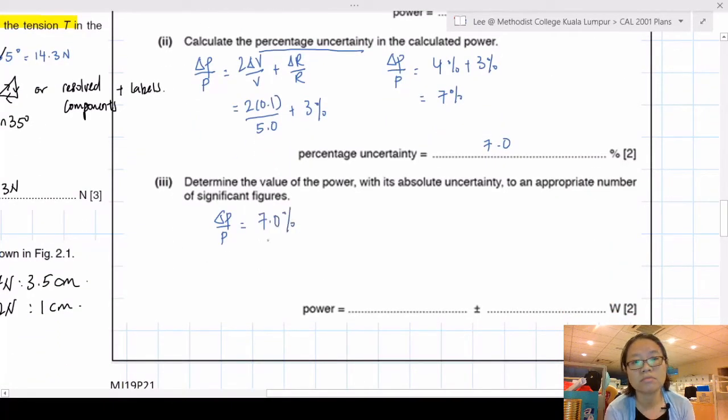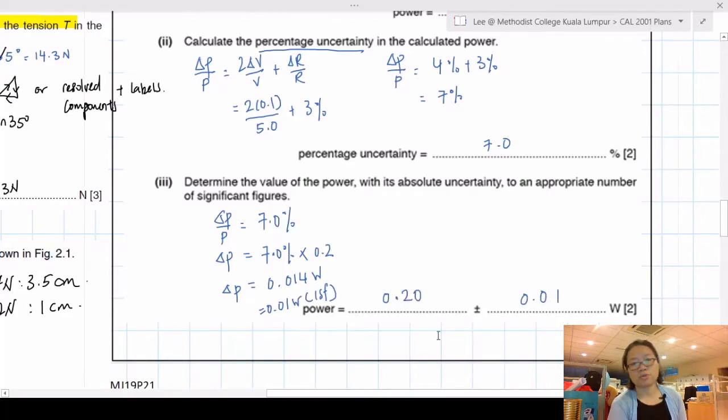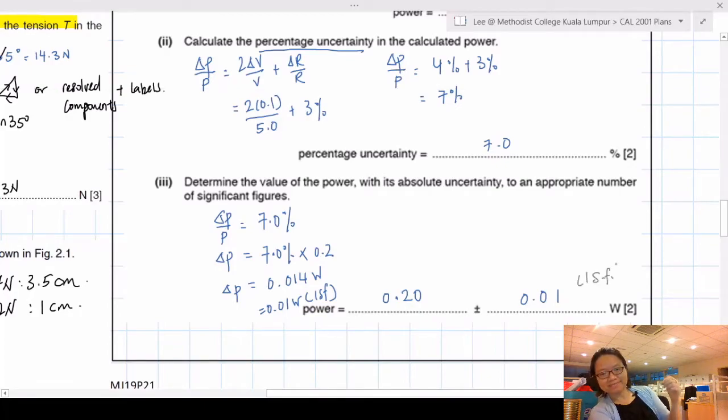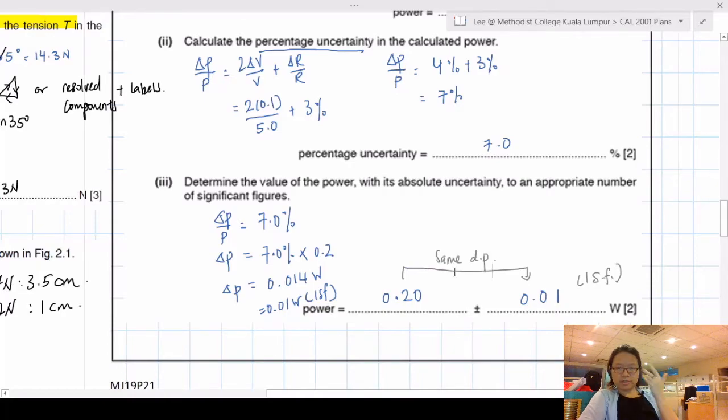If you have 7%, the percentage uncertainty is 7.0%, write in 2 SF. Now find the absolute uncertainty. We know the percentage is 7%, so the absolute is 7% of 0.2, which is 0.014. One SF, so 0.01, and two decimal points. We follow the decimal points. Any mistakes regarding SF and DP will lose you one mark, so let's not lose that kind of mark.